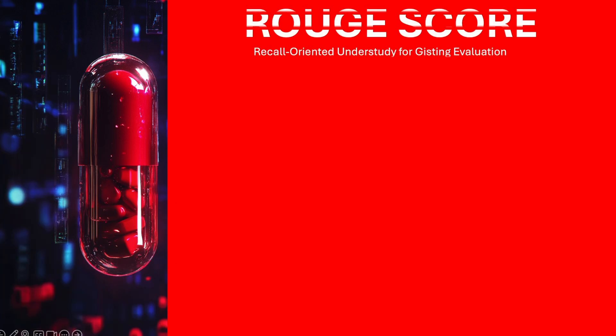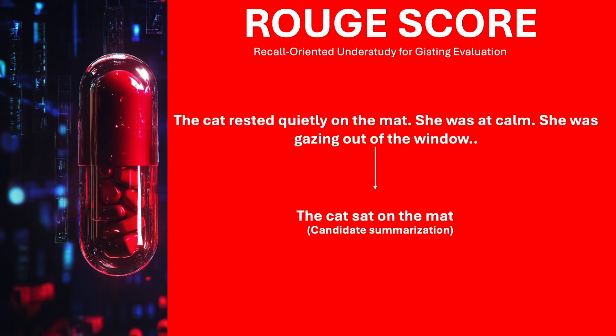Now let us look at the ROUGE score, which is the measure of quality of text summarization. ROUGE, which means red in French, stands for Recall-Oriented Understudy for Gisting Evaluation. Now let us take this sentence: 'the cat rested quietly on the mat, she was calm, she was gazing out of the window.' And let us say the large language model summarized it as follows: 'the cat sat on the mat.'